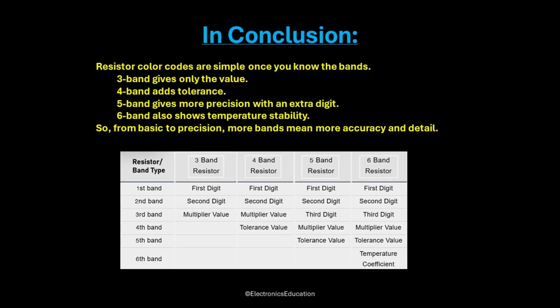So in conclusion, resistor color codes are simple once you know the bands. Three band gives only the value. Four band adds tolerance. Five band gives more precision with an extra digit. And six band also shows temperature stability. So from basic to precision, more bands mean more accuracy and detail.